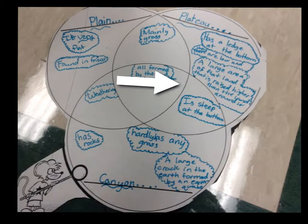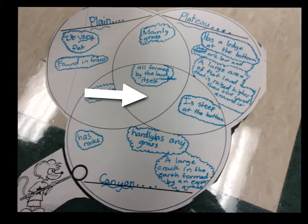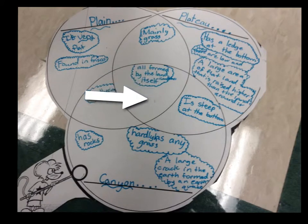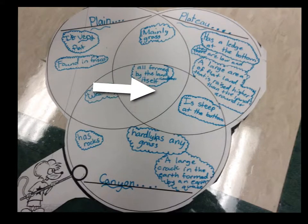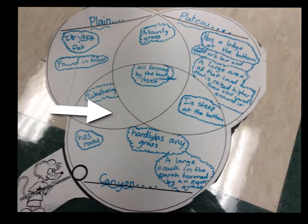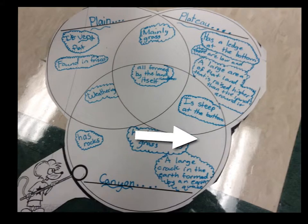A plain and a plateau are mainly grass. And all of these, even the canyon, are all formed by the land itself. A plain and a canyon are formed by weathering, and a plateau and the canyon are steep at the bottom.